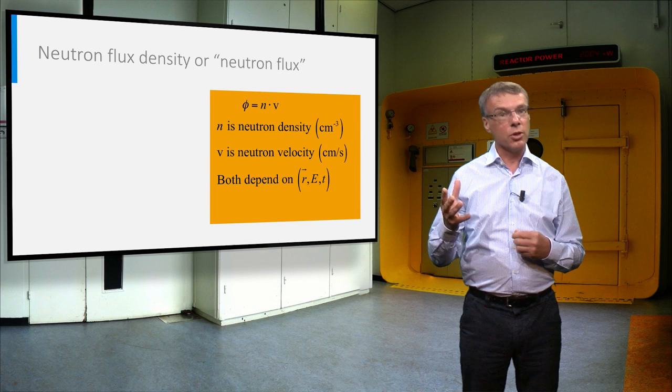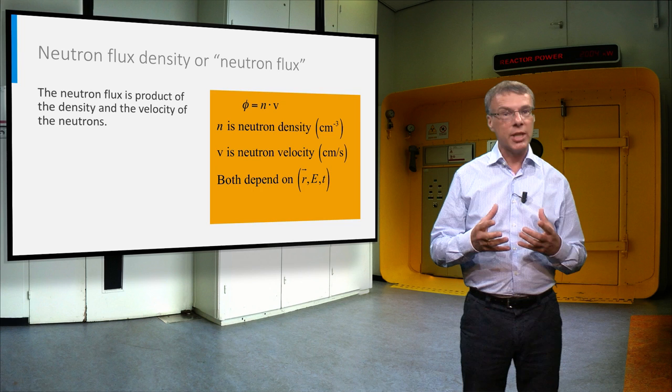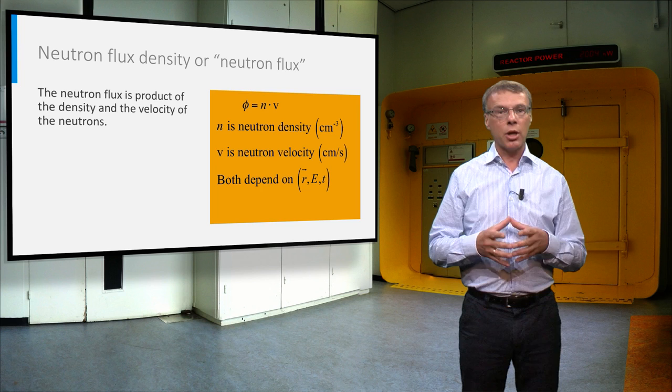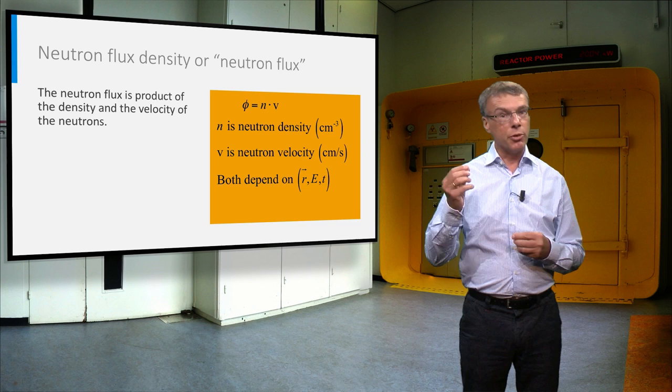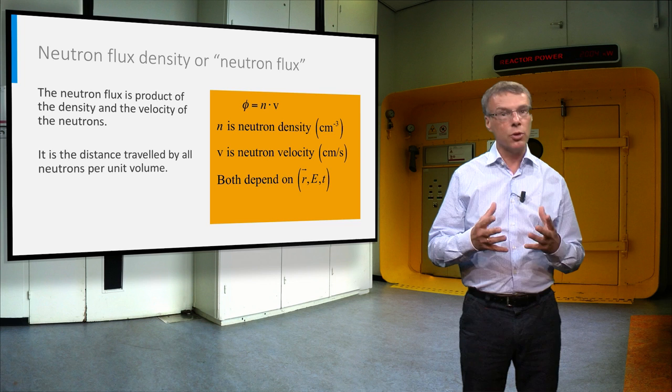First we define the neutron flux density, sometimes briefly called the neutron flux. In contrast to other fields in physics, the neutron flux density is not a vector but a scalar. It is equal to the product of the neutron density and the velocity of the neutrons. Therefore it can be viewed as the total distance traveled by all neutrons in a unit volume per unit time.